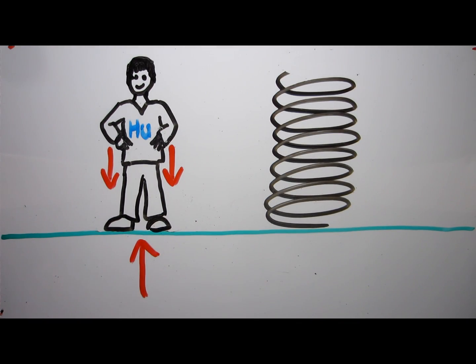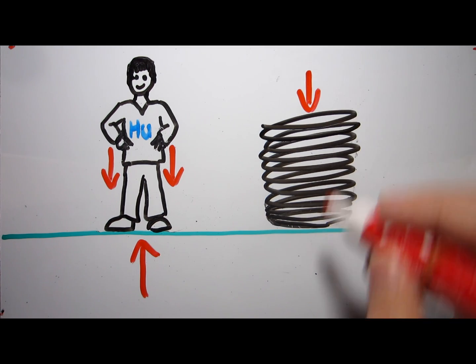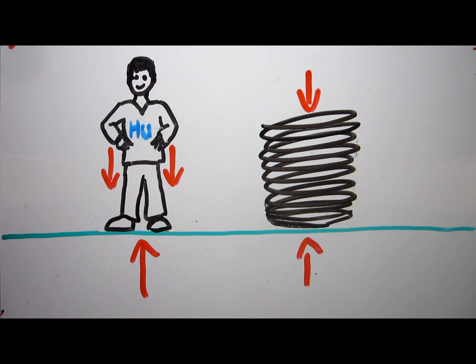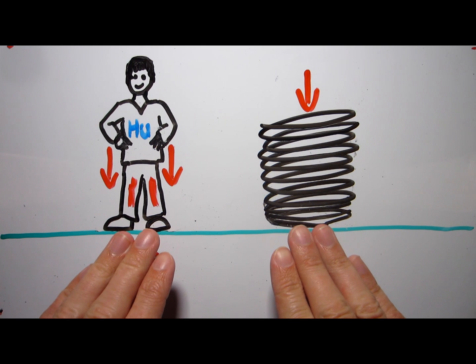If you think of yourself as a big spring, gravity would be compressing you against the force of the ground. That compression, and the muscles in your body that fight it to keep you upright, is where the feeling of weight comes from. But gravity alone doesn't cause this kind of compression. You need something to oppose it.